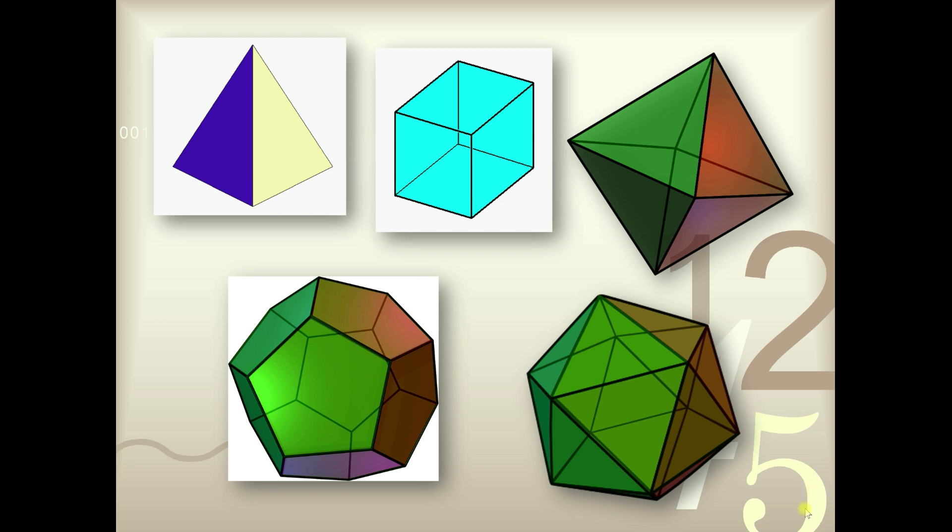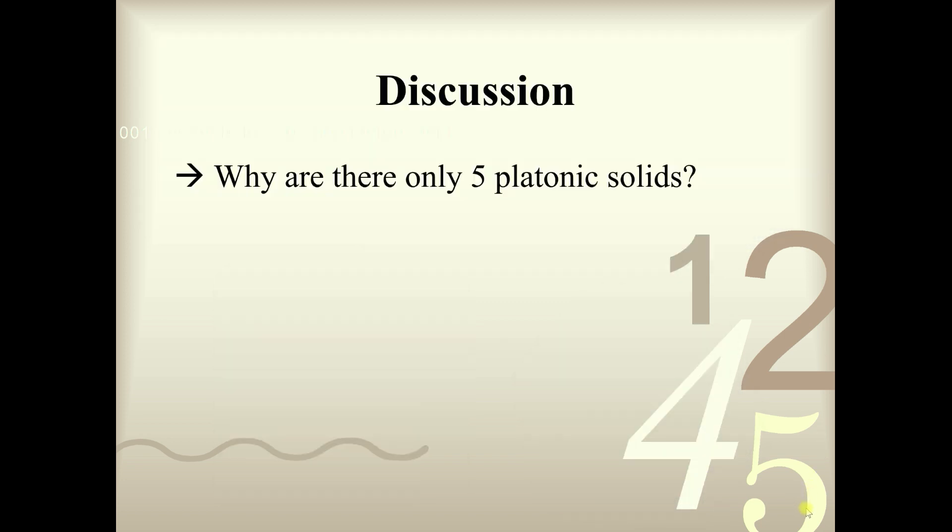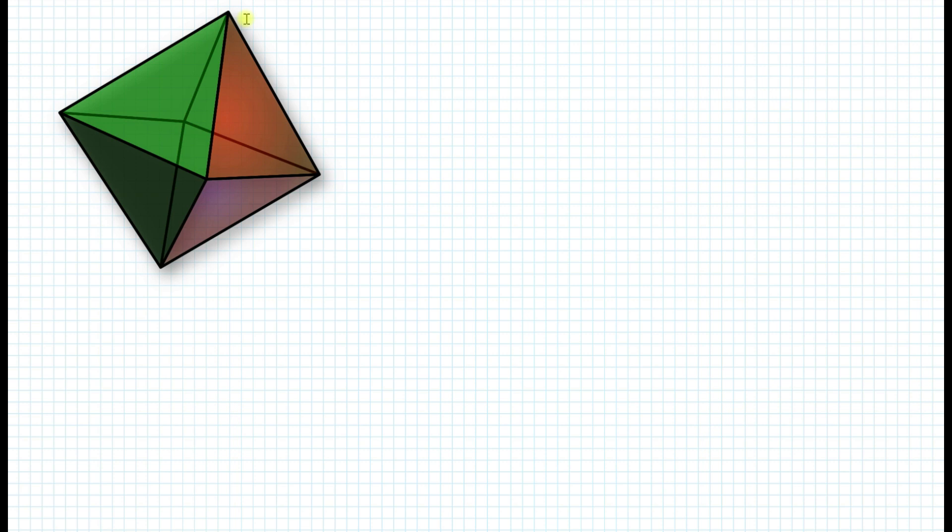But here's a discussion for you: why are there only five platonic solids? Can't we make more platonic solids out of regular polygons? It seems like you could make infinitely many, but there are only five. Why is that? Let's look at an example.